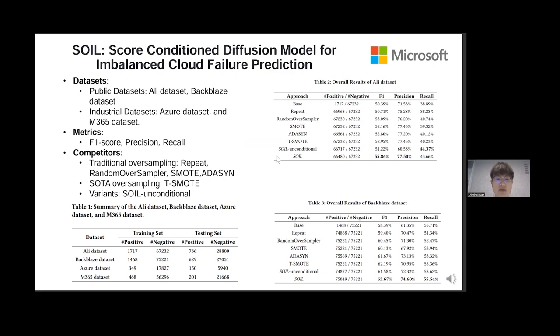We utilize four traditional oversampling methods, one state-of-the-art oversampling method, and SOIL for comparison. To investigate the impact of condition scores on SOIL, we compared it with an unconditional diffusion model, referred to as SOIL unconditioned.